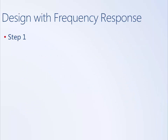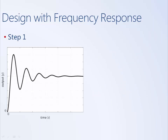So let's go through a simple example. The first step is to analyze the system's time response. Let's say we look at a system step response and determine that this behavior isn't good enough — it's too slow, it has too much overshoot, and the steady state error is too large. So basically we need to improve everything about the time response.